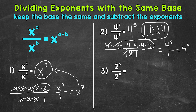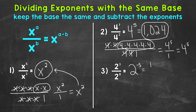Let's move on to number 3, where we have 2 cubed divided by 2 to the power of 8. Keep the base of 2 the same, and then subtract the exponents. So we have 3 minus 8, which gives us negative 5. So we have 2 to the power of negative 5. A negative exponent indicates we perform the inverse — we take the reciprocal. So this gives us 1 over 2 to the power of 5. Now 2 to the power of 5 equals 32, so our solution is 1 over 32.